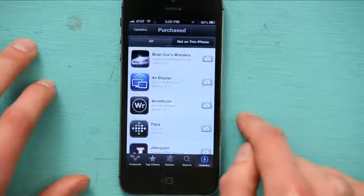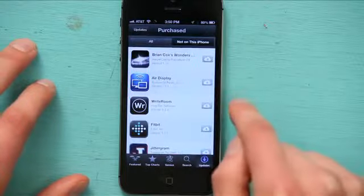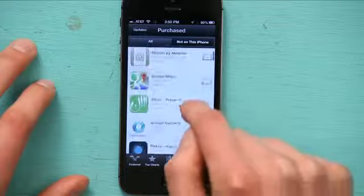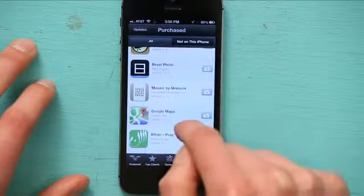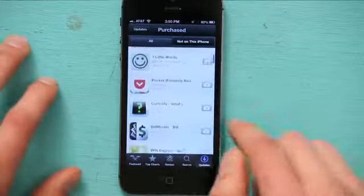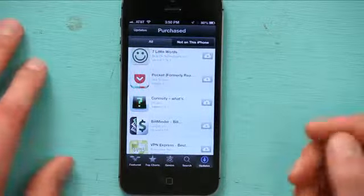Like Write Room for example. If I tap that, I can download it, and all sorts of other things like Bezel Photo, Mosaic. I mean, there are tons of things that I downloaded. Any one of them that I want to put onto this phone, I can do it.